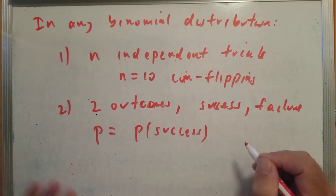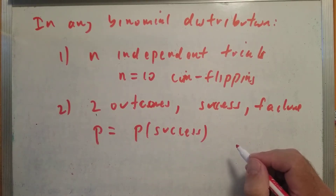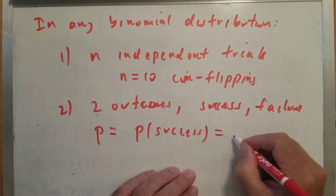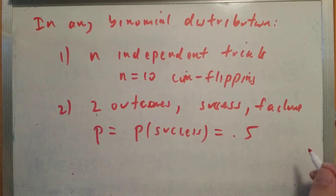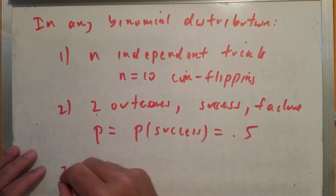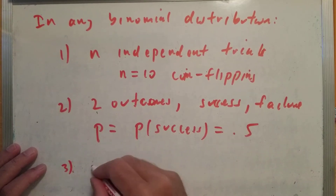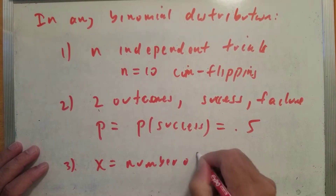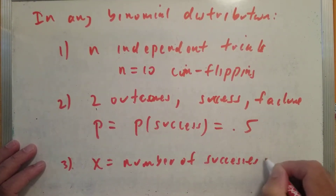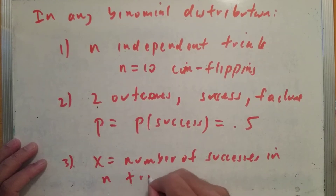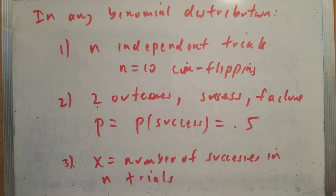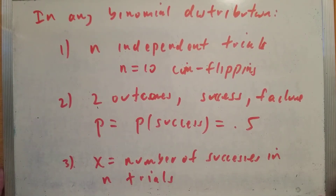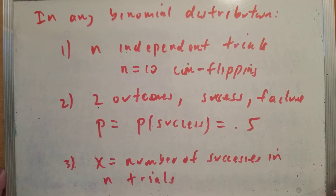In the coin flipping example, we label a head as a success and a tail as a failure. The probability of flipping a head is 0.5 — it's the probability of success since it's a 50-50 shot. The third characteristic is that the random variable x equals the number of successes in n trials, so x would be the number of heads you get. We want to calculate probabilities in any binomial distribution.